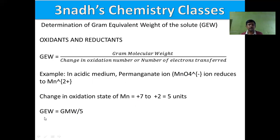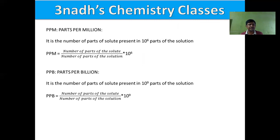That covers normality and gram equivalent weight. The next topic is parts per million (PPM) and parts per billion (PPB). These methods are useful for expressing very low concentrations — cases where we need very little quantity of solute but still need to express its concentration.